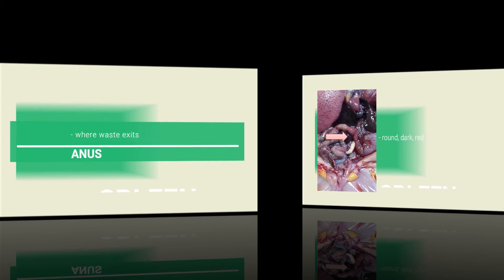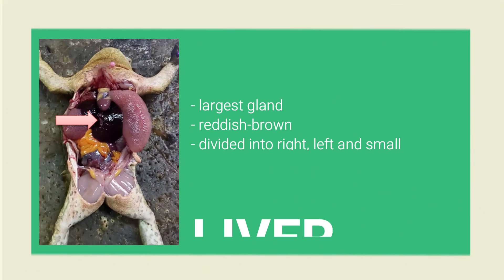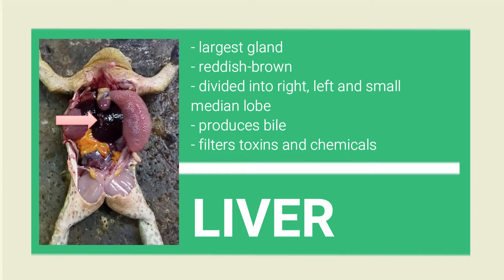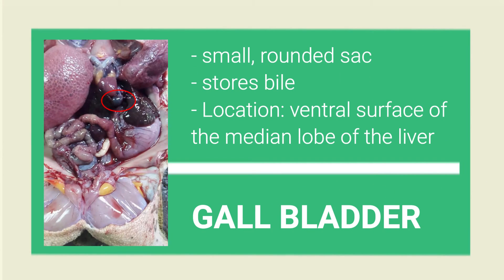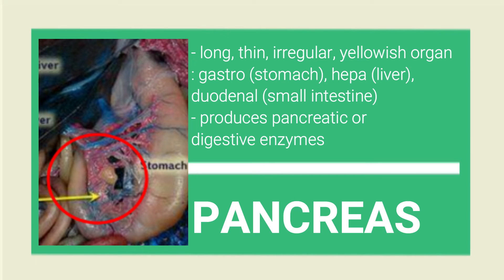Embedded in the mesorectum is the spleen, which functions as a reservoir for blood. Then here is the liver, which occupies the anterior half of the pleuroperitoneal cavity. The liver secretes bile for the digestion of fats. The bile is stored in the gallbladder. When the gallbladder is full, the bile is then secreted into the common bile duct. Also, the pancreas produces pancreatic juice, insulin, and digestive enzymes. The pancreas is suspended in the gastrohepaticoduodenal ligament or lesser omentum, with its ends touching the liver and near the pylorus.